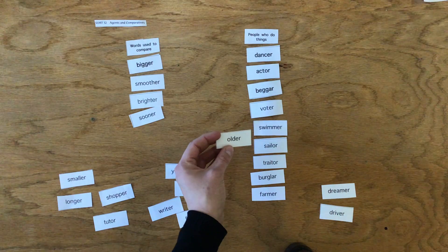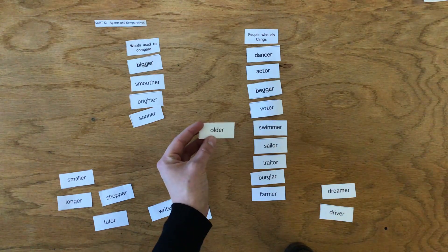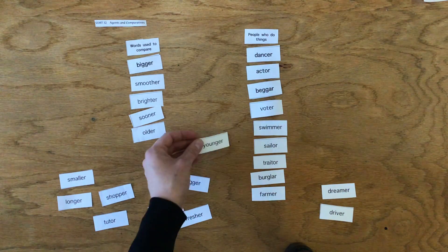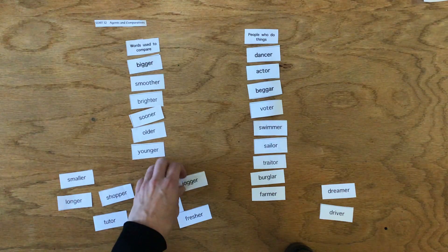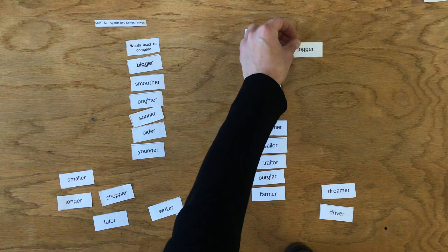Older. So this would be, I am older than my brother—I'm comparing myself to my brothers. Younger is another comparative adjective. Jogger would be somebody who jogs.